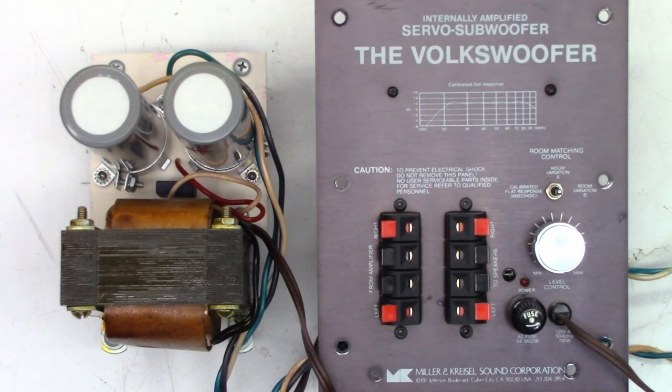I'm going to go out on a limb and say this is one of the first Miller and Kressel subwoofers, the Volkswoofer. Let's take a look at this thing.